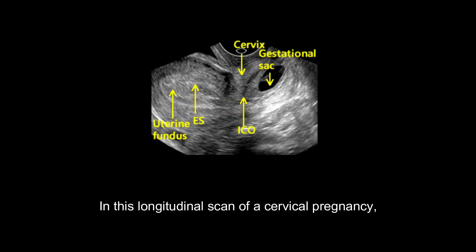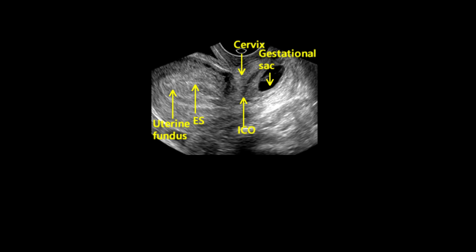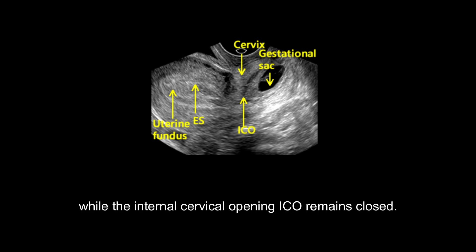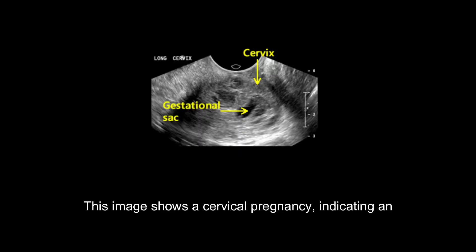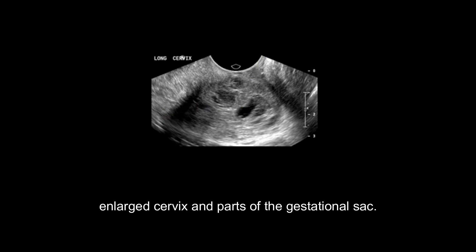In this longitudinal scan of a cervical pregnancy, the gestational sac is seen within the cervix while the internal cervical opening (ICO) remains closed. This image shows a cervical pregnancy, indicating an enlarged cervix and parts of the gestational sac.